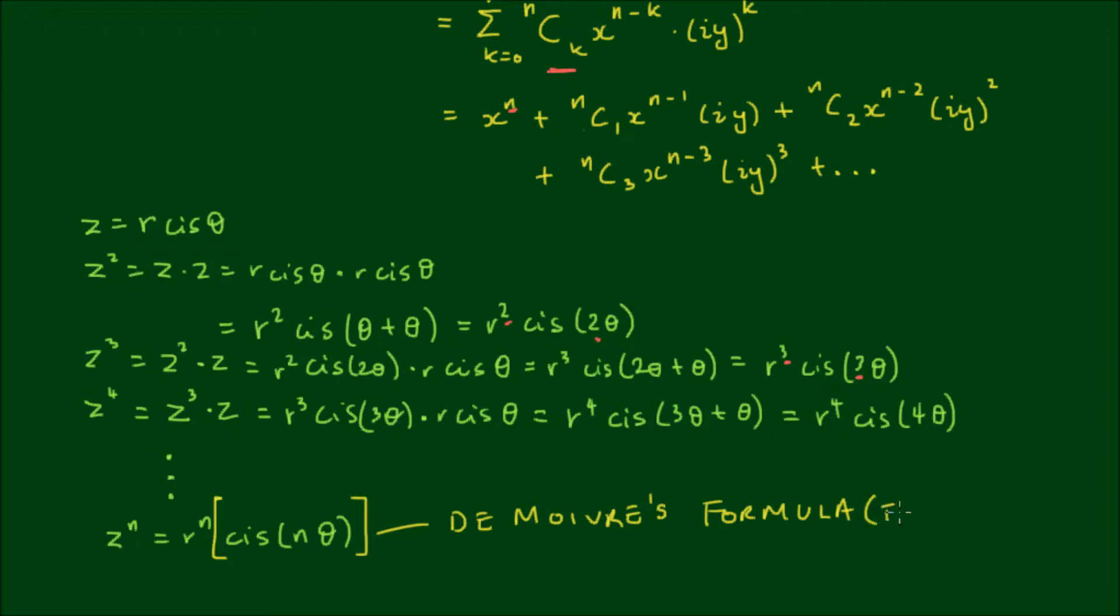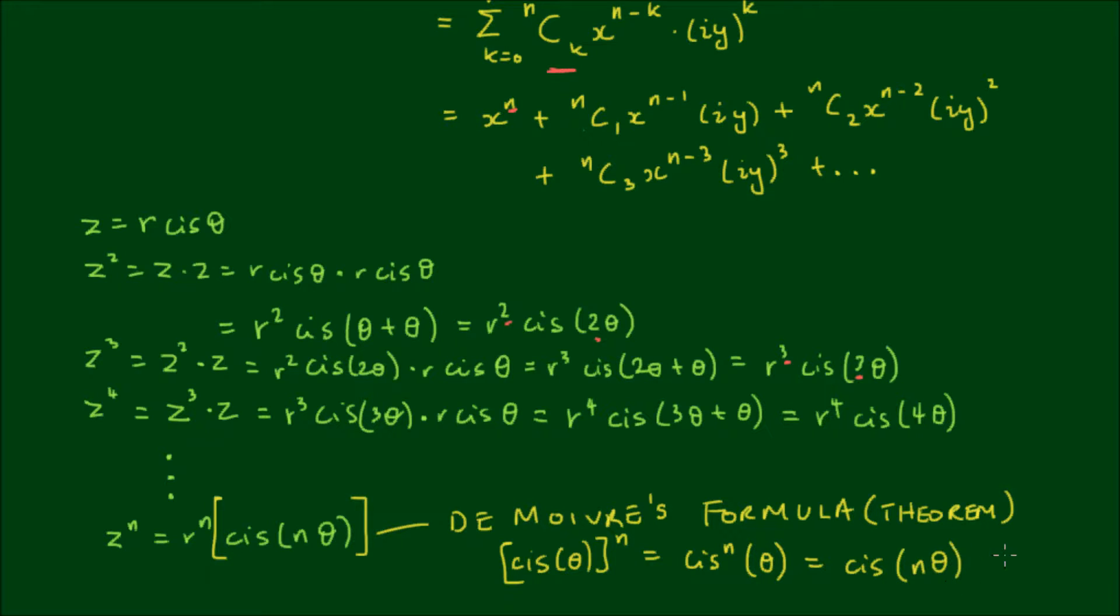Or De Moivre's theorem. And De Moivre's theorem simply says cis theta to the power of n, which I can also write as cis of the nth power of theta, is simply equal to cis of n times theta. Okay, so let's do an example.